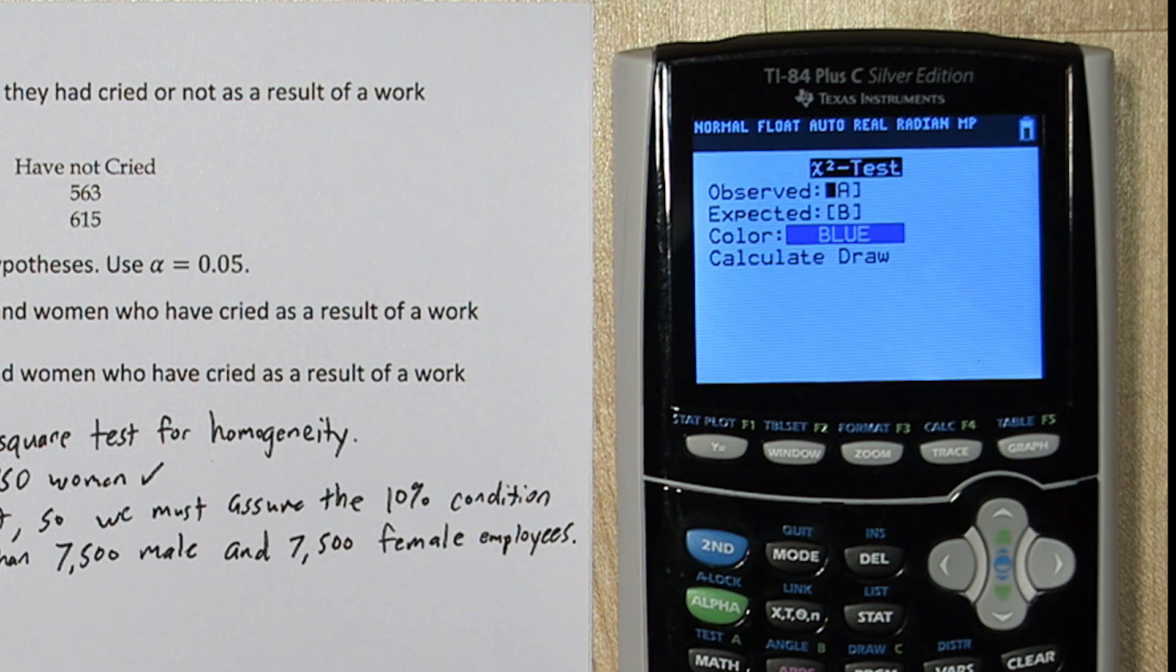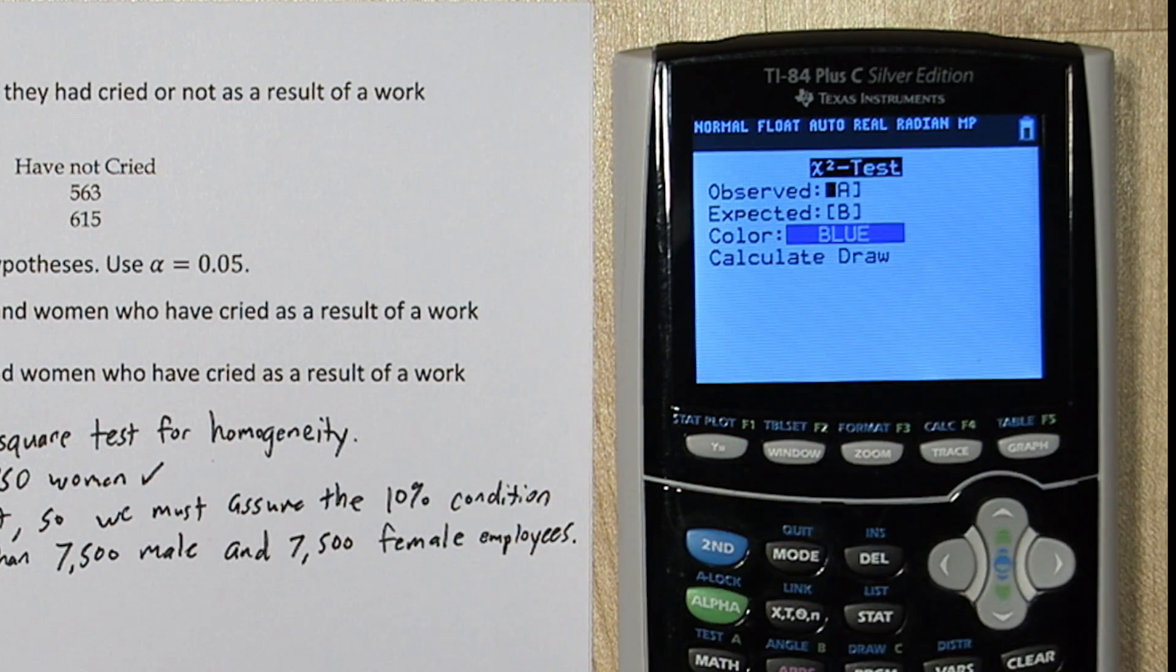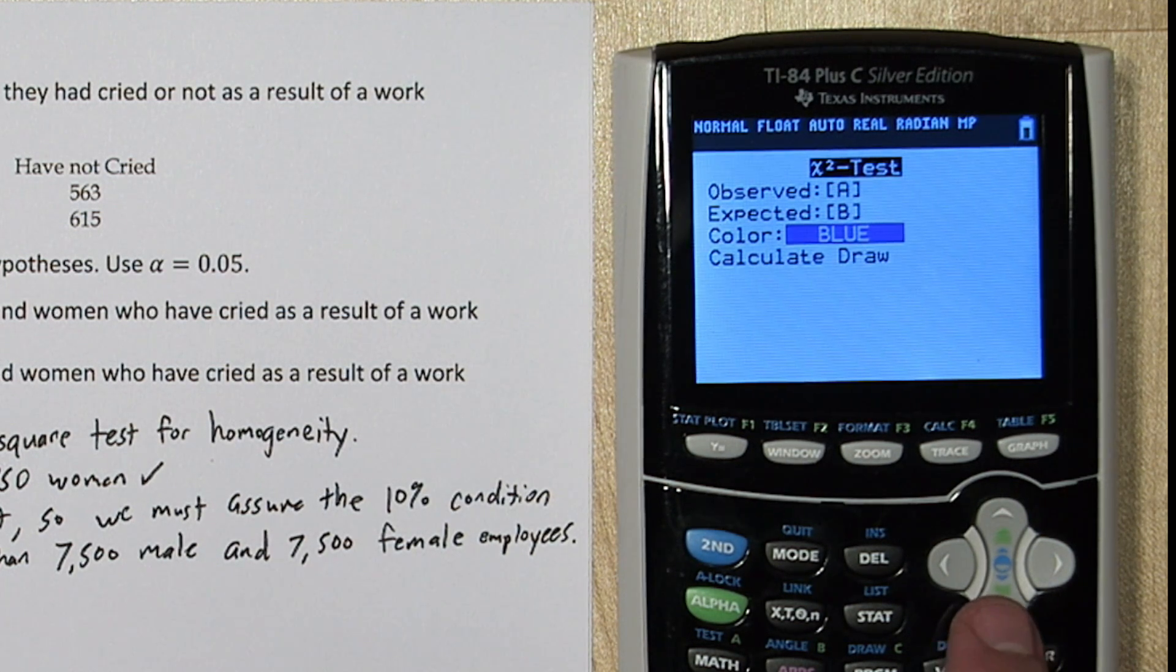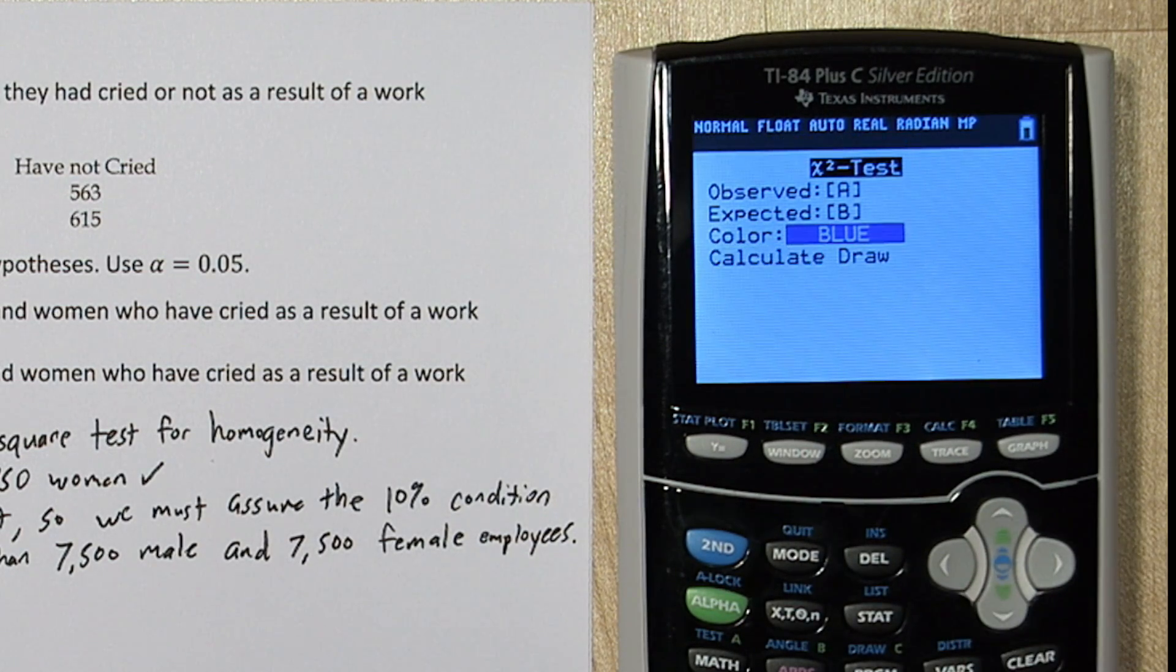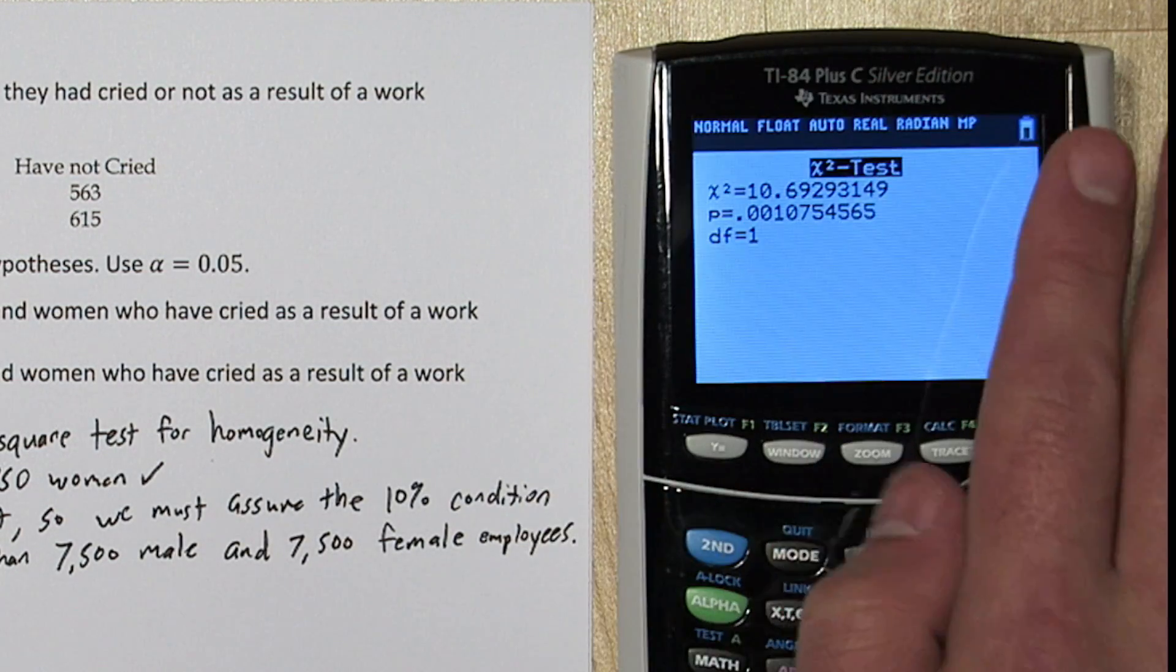Now it says where is your observed matrix? And our observed matrix is matrix A, so we're good. And it says where do you want your expected matrix to be? Matrix B is just fine. So I'm going to push calculate. I'm going to ignore this for now.